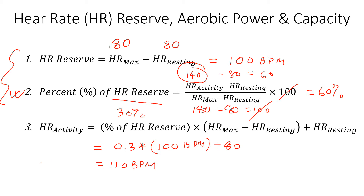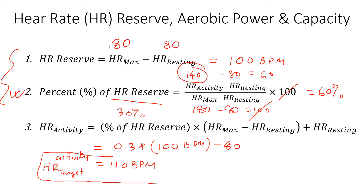So the target heart rate — or activity heart rate — for this particular person is 110 beats per minute; either term is fine. You want to make sure that this person cannot go over 110, to keep them at a rate of 30% of their reserve.